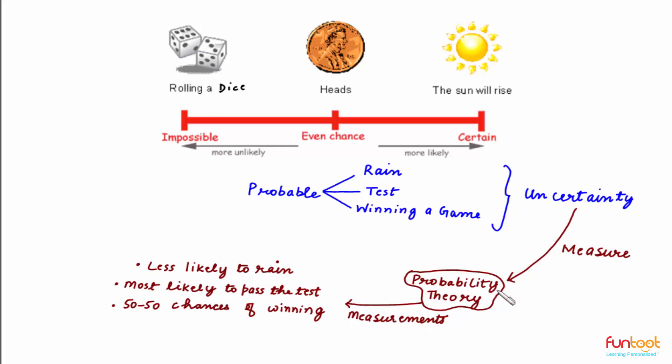Loosely, we use these measurements of uncertainty in our daily life to say things like less likely to rain, most likely to pass the test, or 50-50 chances of winning.